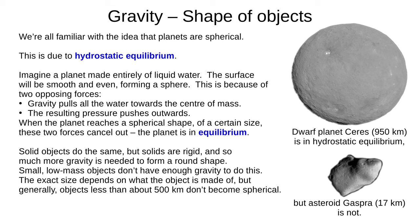We're all familiar with the idea that planets are spherical. The reason is a condition called hydrostatic equilibrium. Imagine a planet made entirely of liquid water — the surface will be smooth and even, forming a sphere. This is because of two opposing forces: gravity pulls all the water towards the planet's centre of mass, and the resulting pressure pushes outward. When the planet reaches a spherical shape of a certain size, these two forces cancel out. Hydro means water, static means stationary, and equilibrium means the forces cancel out.